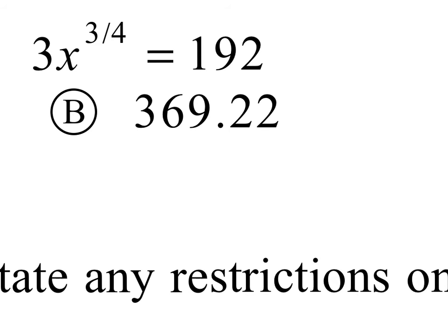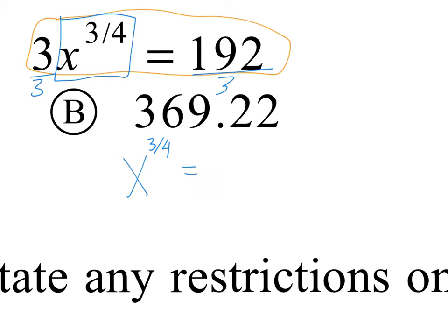We're going to jump back because I forgot to include number 5 for my first time through. That's solving the equation 3x to the 3/4 is equal to 192. The first thing I'm going to do here is to get the messy part, get this x with an exponent by itself. To do that, I'm going to divide both sides by 3.